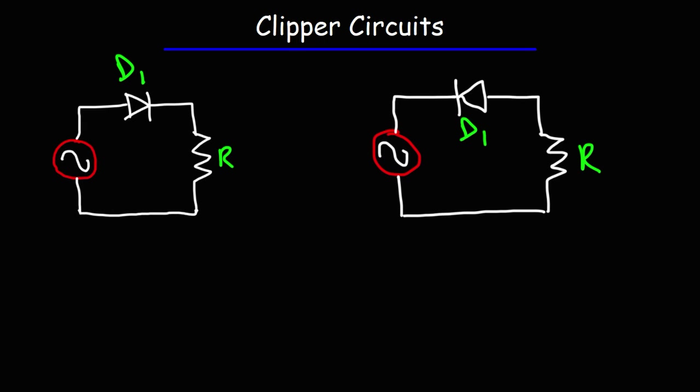In this video we're going to talk about clipper circuits. The two circuits on the board are known as series clipper circuits. The reason why they're called series clipper circuits is that the diode is in series with the input voltage source.